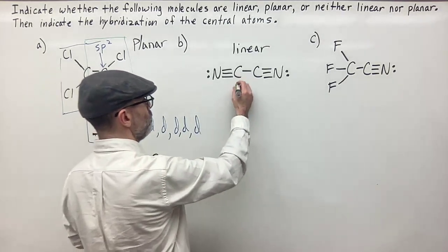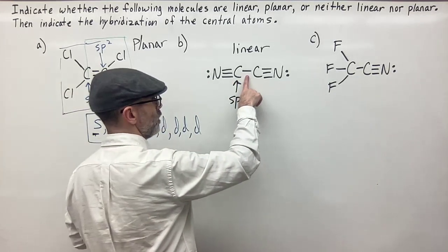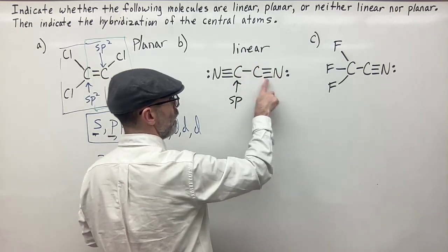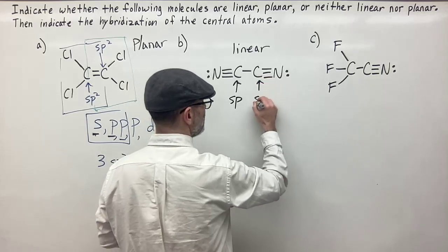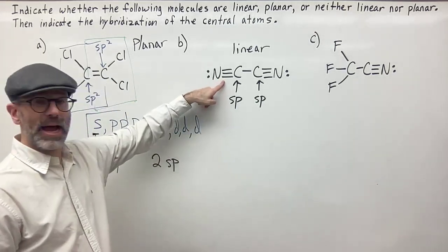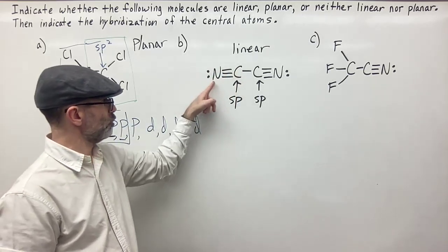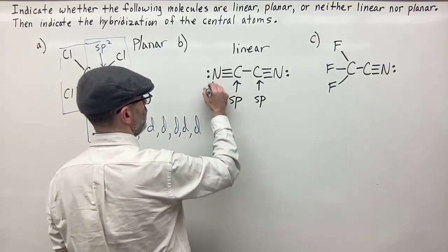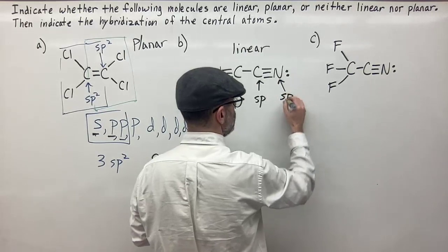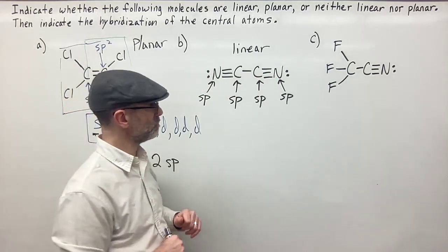So this carbon is SP hybridized. The other carbon also has two electron groups — one carbon and one nitrogen bonded to it — so that's also SP hybridized. What about the nitrogen? Same thing: it has one carbon atom and one lone pair, giving two electron groups total, so it is also SP hybridized. All of them are SP hybridized, and therefore the molecule is linear.